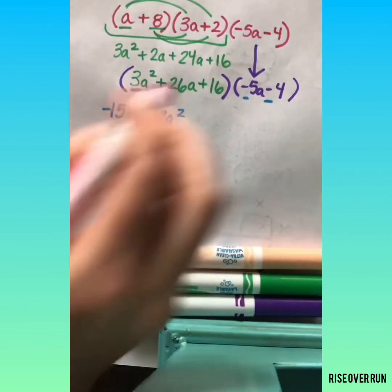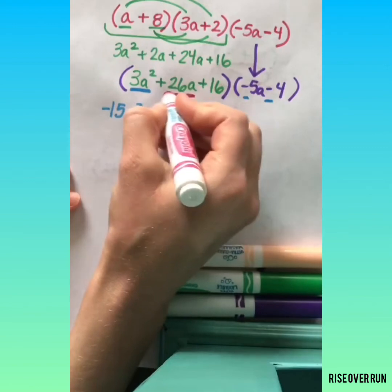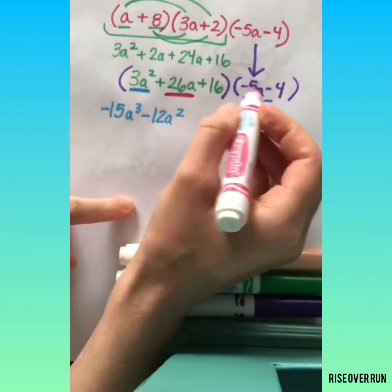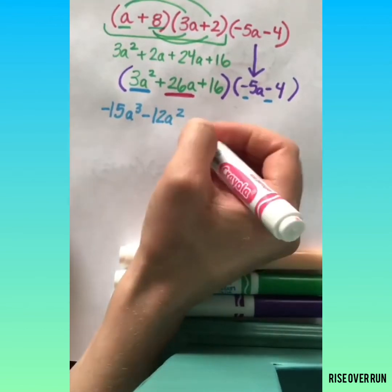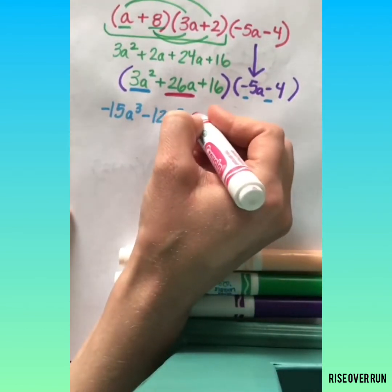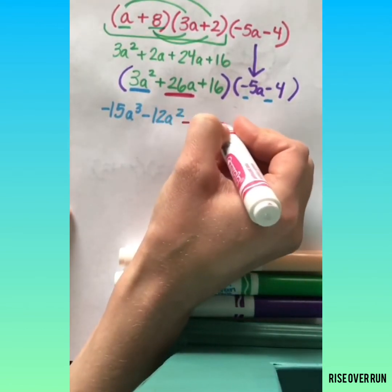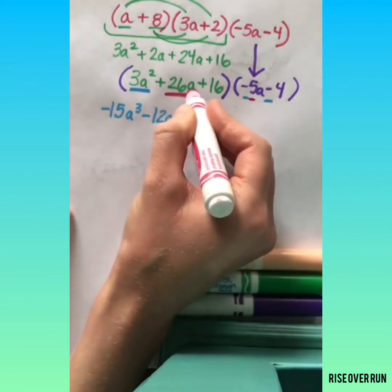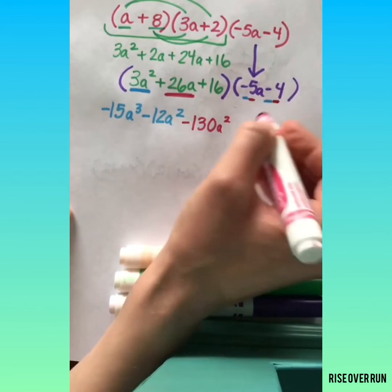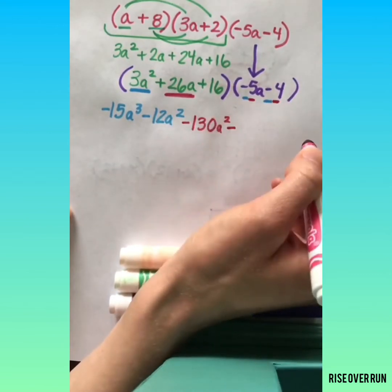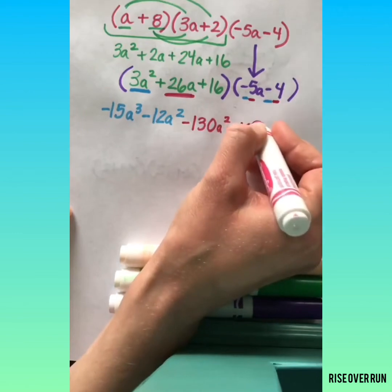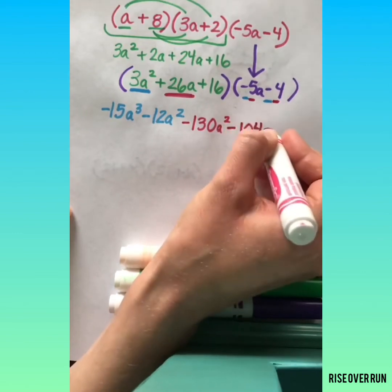Now I'll keep moving on to the next term and multiply both of these. 26A times negative 5A is a negative 130A squared. 26A times negative 4 is negative 104A.